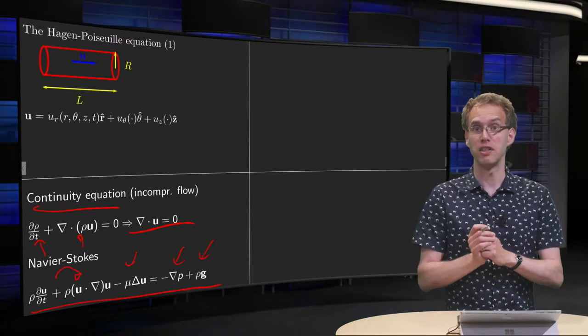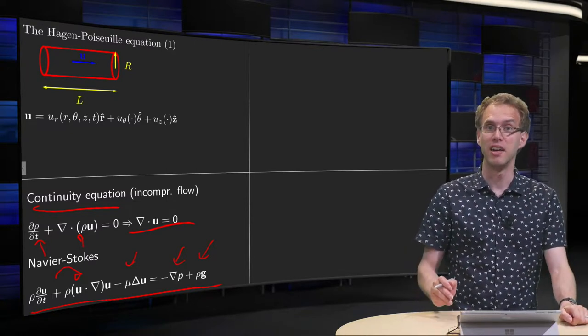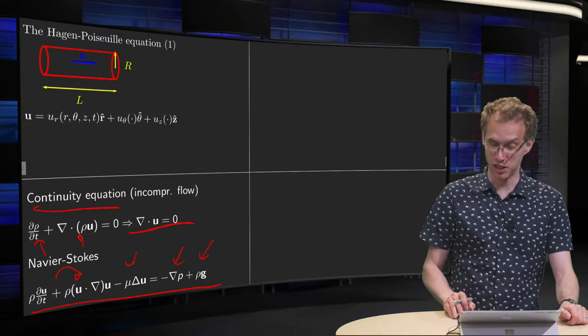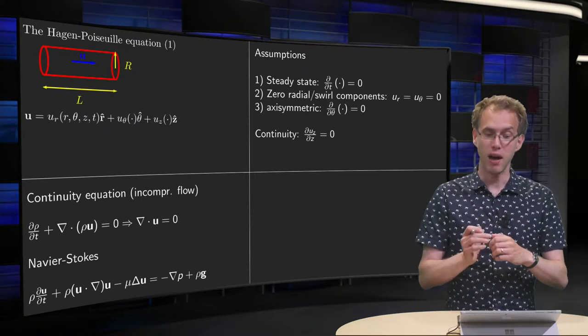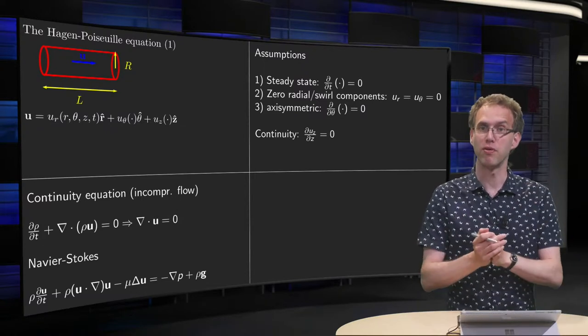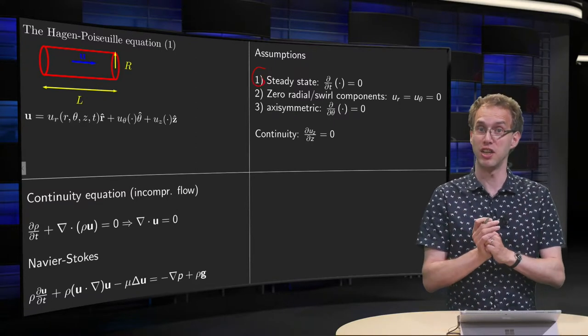Now we are going to simplify this, because in full generality we cannot solve this analytically, and even numerically this is very challenging. So what are we going to do? We have our cylindrical tube, and we assume that we have been waiting for a long time, so that we have some steady state. That means that the temporal derivatives are zero.